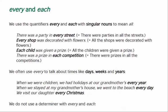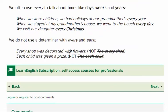Every and each. We use the quantifiers 'every' and 'each' with singular nouns to mean all. 'There was a party in every street' — there were parties in all the streets. 'Every shop was decorated with flowers' — all the shops were decorated. 'Each child was given a prize' — all the children were given a prize. We often use 'every' to talk about times like days, weeks, and years: 'We had holidays at our grandmother's every year.' 'We went to the beach every day.' We do not use a determiner with 'each' and 'every' — not 'the every shop' or 'the each child'.